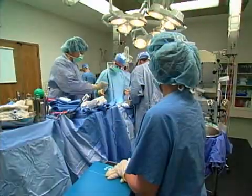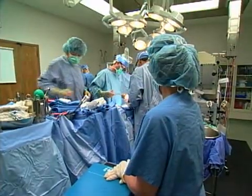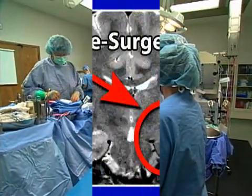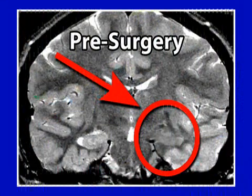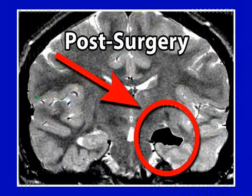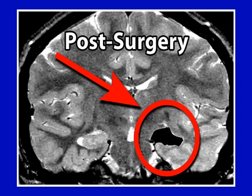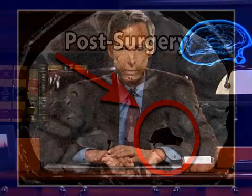All bleeding is carefully controlled during surgery. The surgery does not remove a tiny piece of the brain, but rather a sizable part of one lobe. After the removal of the temporal lobe tissue is complete, the bone is replaced and secured to the skull, and the scalp is then sutured.